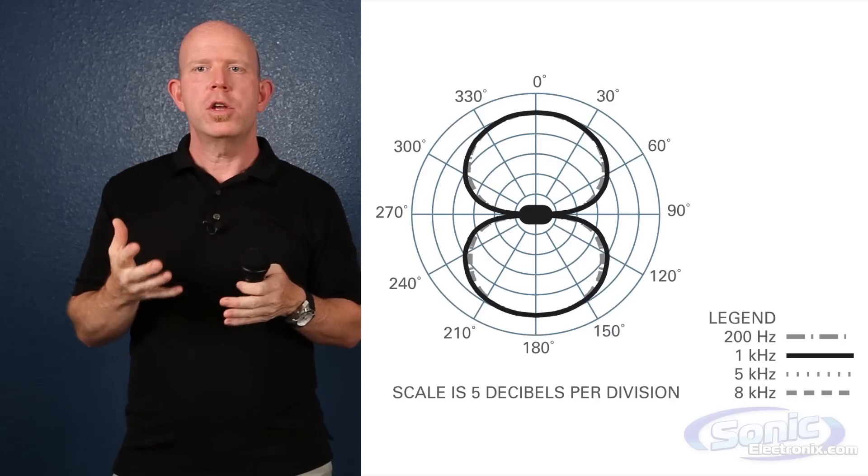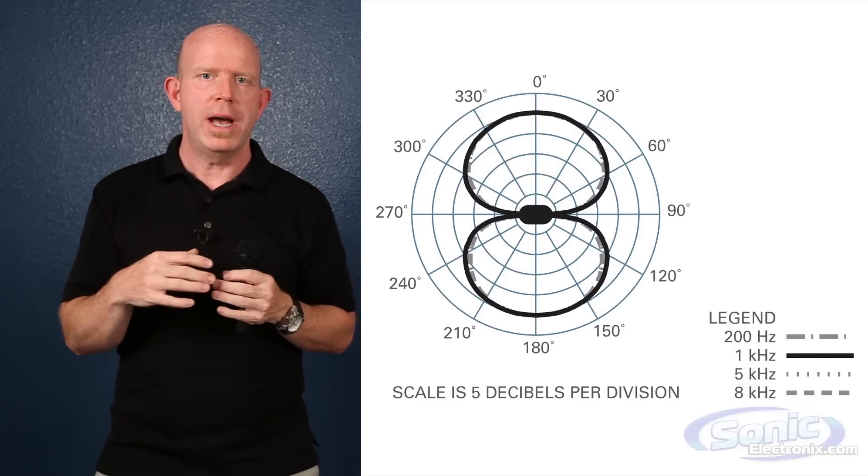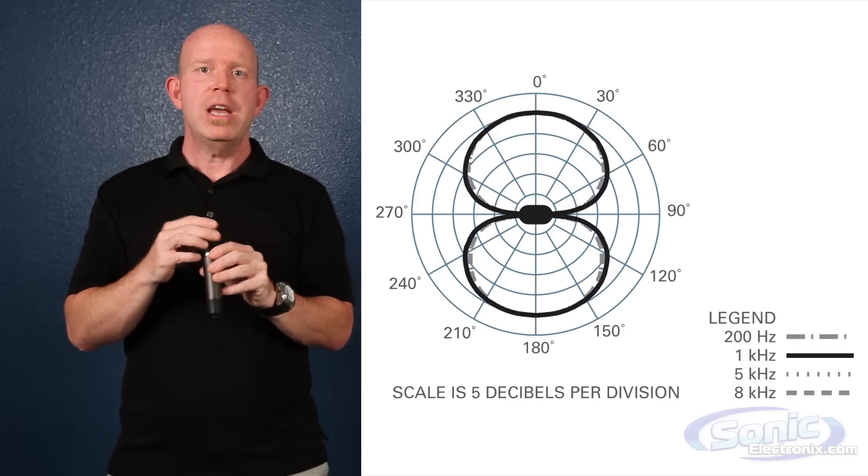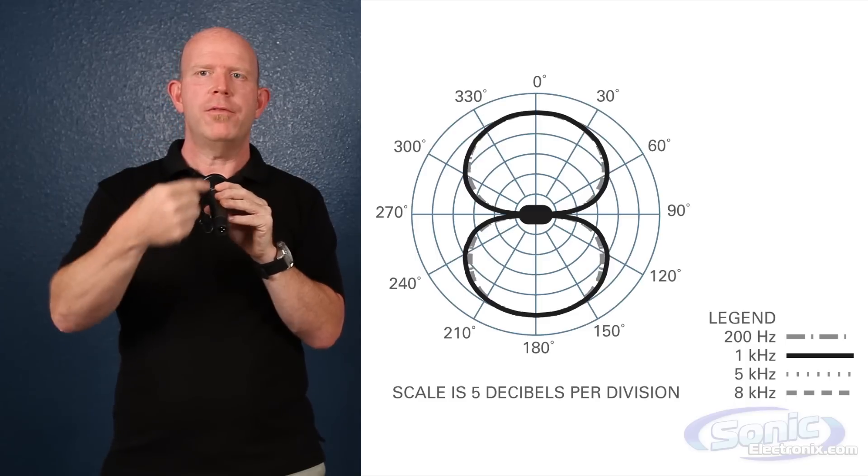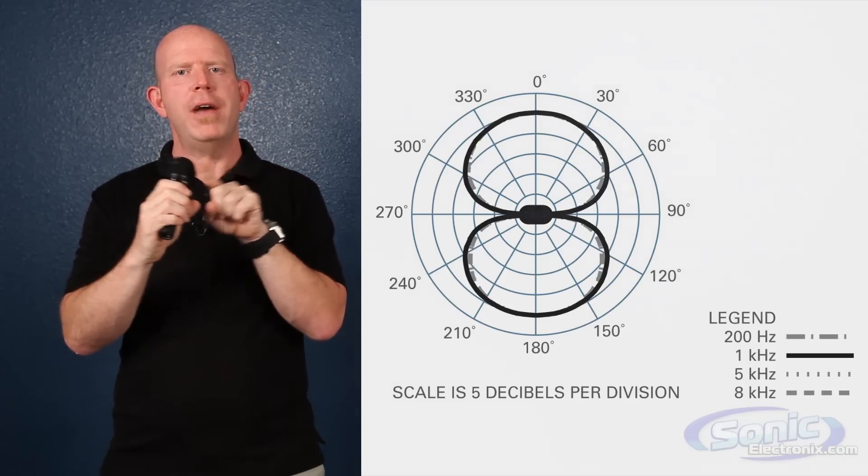Now other popular unidirectional patterns are bidirectional, also known as figure of eight. You see those in a lot of studio mics and most ribbon microphones are figure of eights. These microphones pick up equally well from the front and from the back, but the null point on figure of eight microphones is 90 degrees off axis.